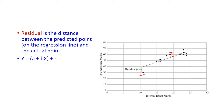These variations are called errors. The residual error is the distance between the predicted point and the actual point. Our predicted point lies on the regression line, but the actual point lies elsewhere, and the distance between these two points is called the residual error, represented by E.